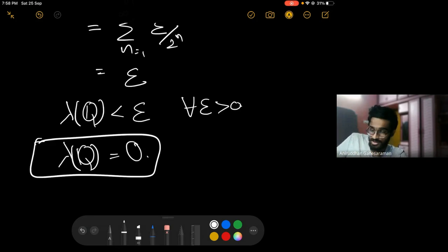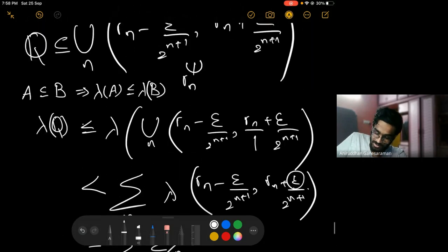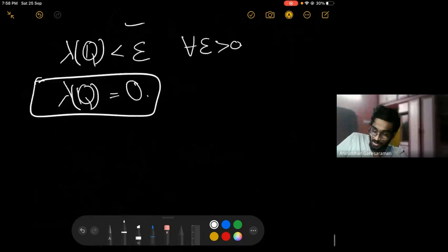This proves that the length of all rational numbers is zero. Now in fact, this argument can be extended even further. You can simply say that the length of any countable set is zero. You can simply write the exact same argument without any change. Just replace Q by S, where S is any countable set.